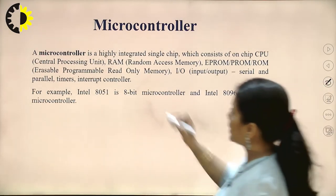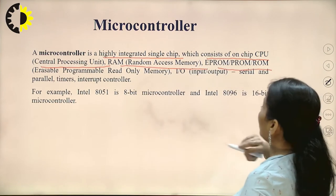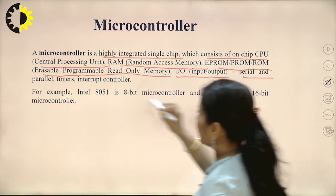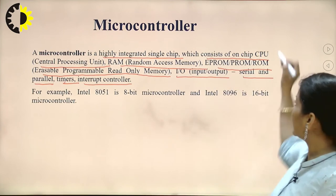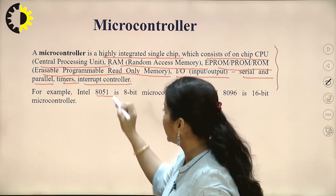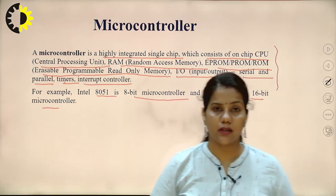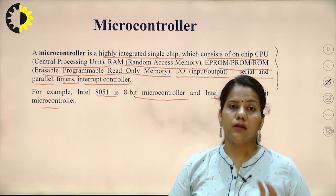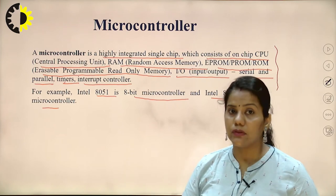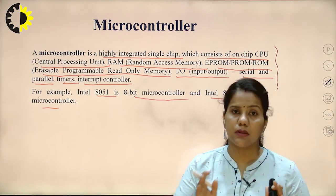A microcontroller is a highly integrated single chip which consists of an on-chip CPU, RAM, EEPROM/PROM/ROM, input/output ports (serial and parallel), timers, and interrupt controller. When all these components are present on a single chip, they form the microcontroller. For example, the Intel 8051 is an 8-bit microcontroller and the Intel 8096 is a 16-bit microcontroller.